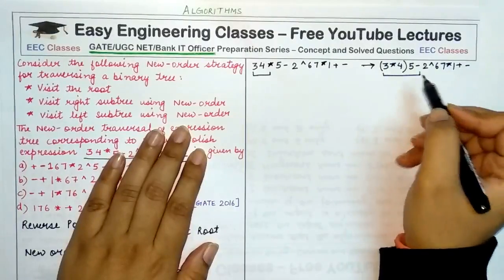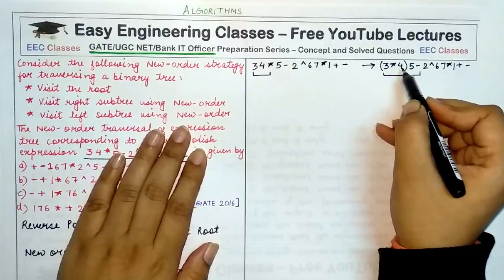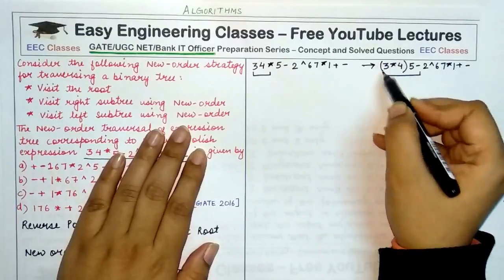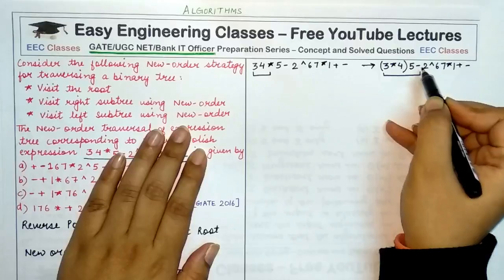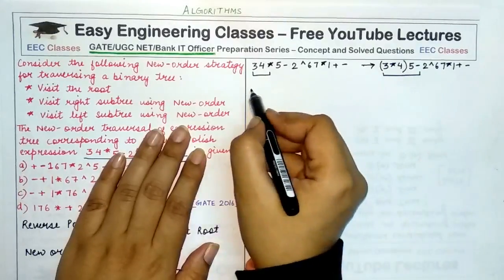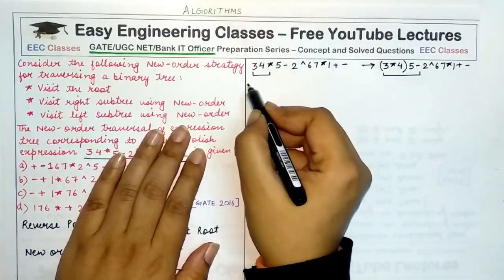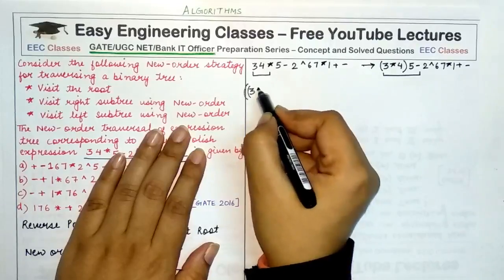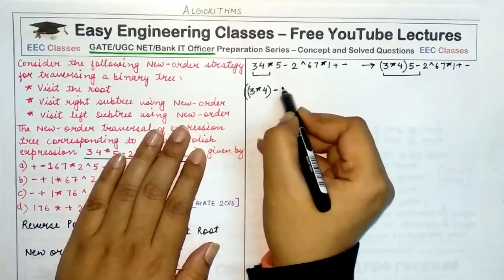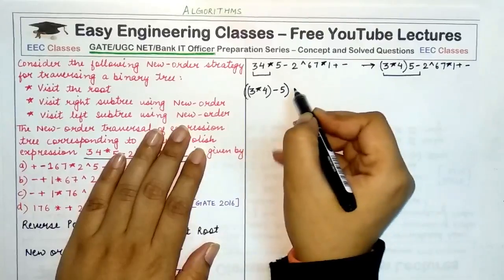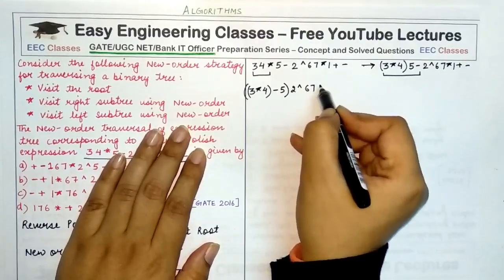Next, consider (3 * 4) as one operand, five as the second operand, and minus as the operator. The next corresponding infix expression becomes (3 * 4) - 5, and we write the remaining expression as it is.